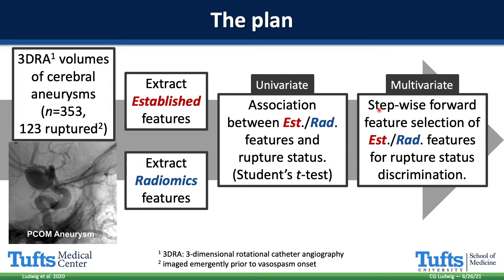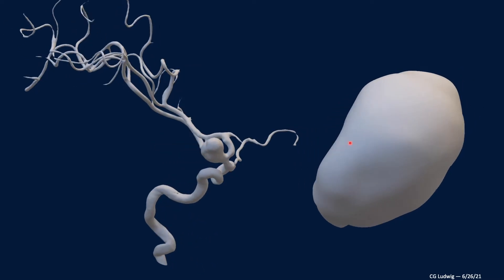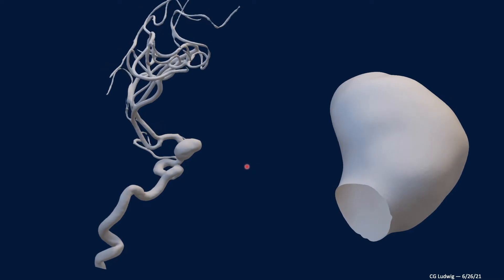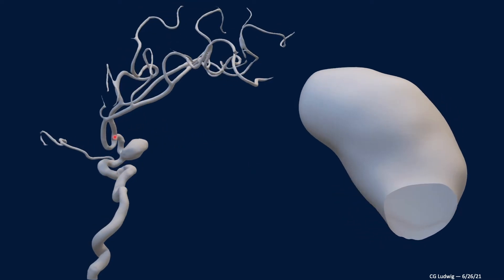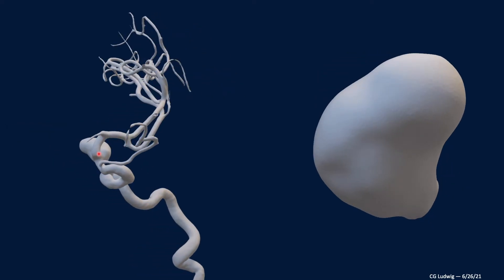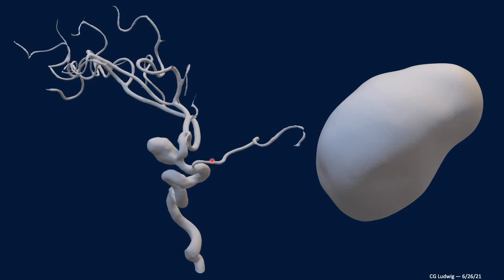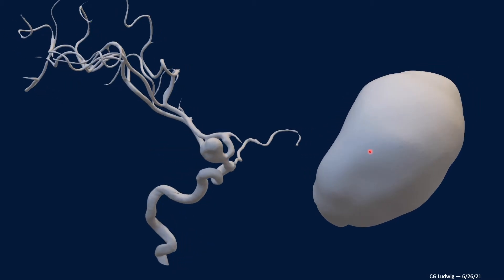For a multivariate analysis, I did stepwise forward feature selection of established and radiomics features separately, each individually, for rupture status discrimination. The input to radiomics is these volumetric reconstructions of real patient aneurysms. We chop off the aneurysm from the parent vasculature so that we can study the size, shape, and other morphology of the aneurysm in isolation.